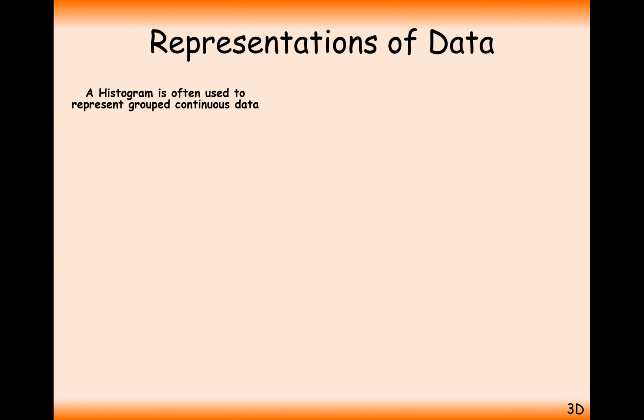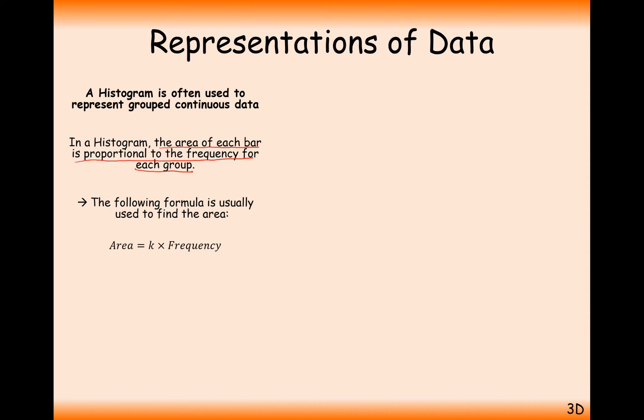Now hopefully you've seen these at GCSE. They're used to represent grouped continuous data and the important factor in a histogram, it's like a bar chart but not quite a bar chart in that the area of each bar is proportional to the frequency of each group. So it's area equals some constant of proportion times frequency.